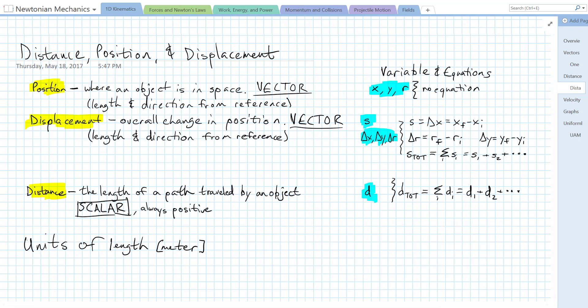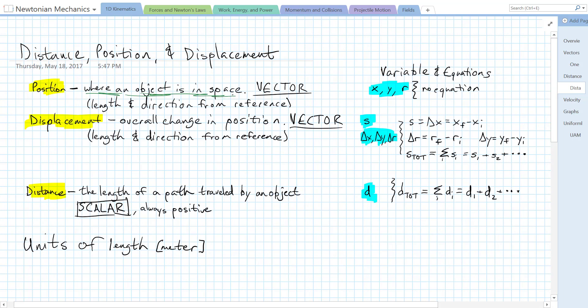Position is just where an object is. That's the lay definition, and that's the definition. Position is a vector, because in order to talk about where something is, you can't just say how far it is away from you.